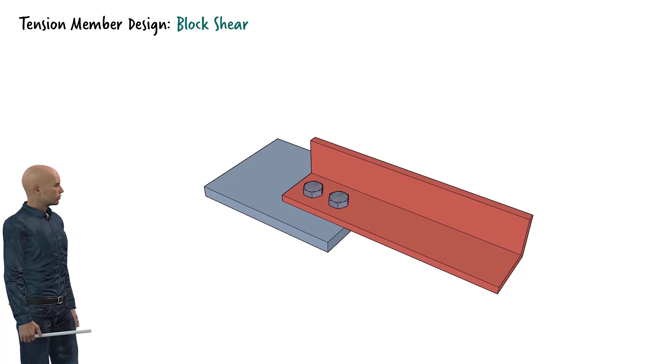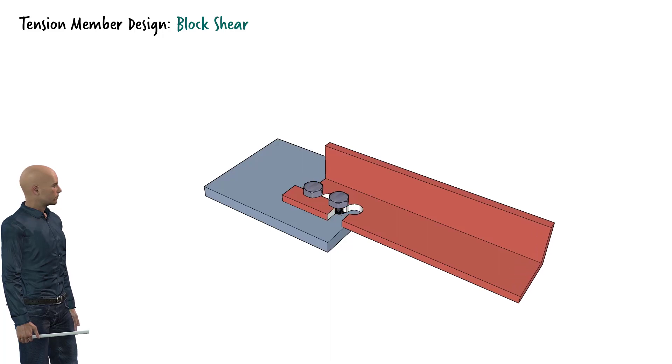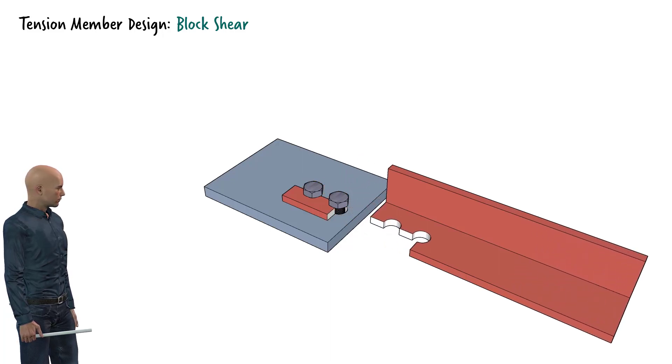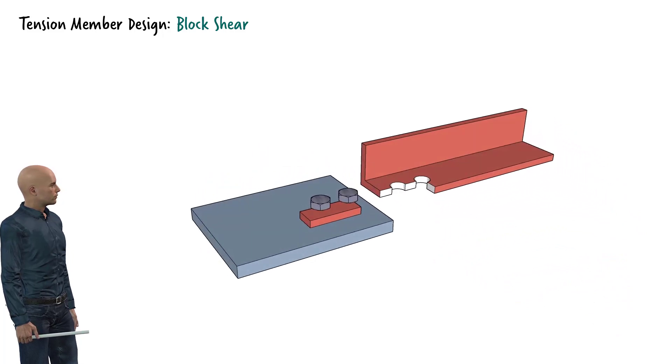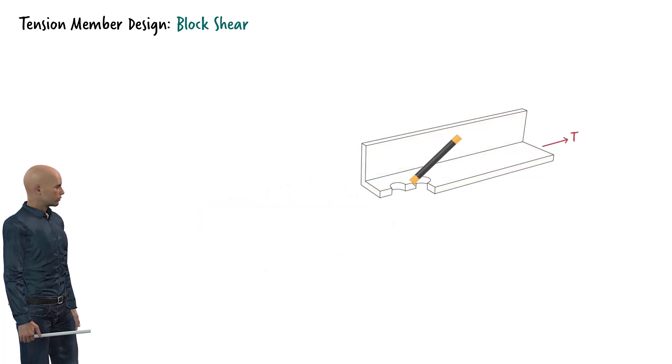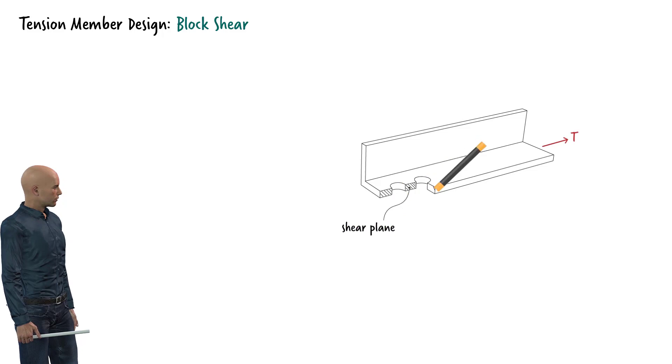Suppose the tension member is connected to a gusset plate using two bolts. The block shear failure for the member looks like this. The material failure manifests itself in the tearing of the member along two planes, the shear plane and the tension plane.